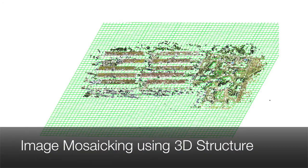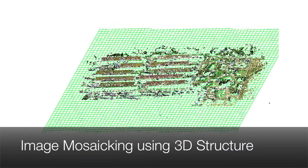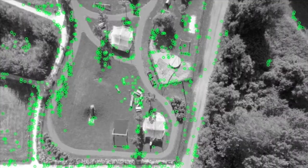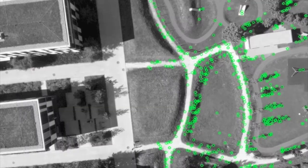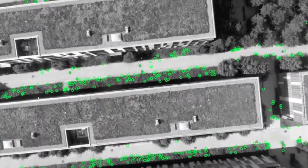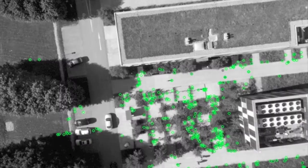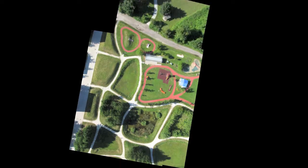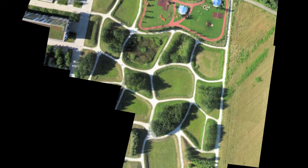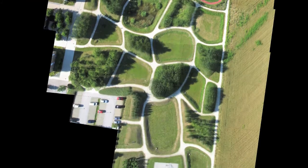From the captured images, we can extract the rough 3D structure, which allows us to select future points on a common ground plane and thus improve the mosaicing results, especially for large areas.